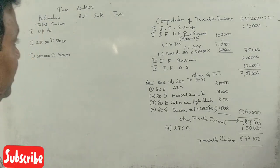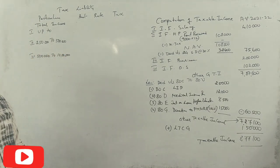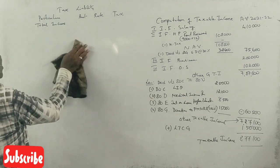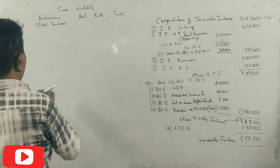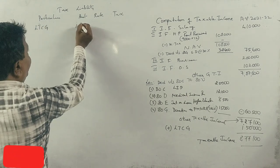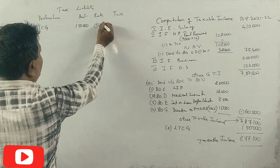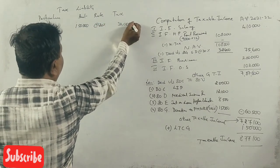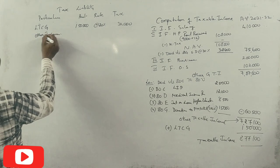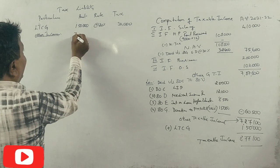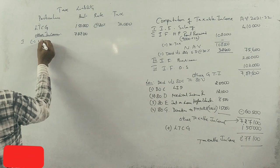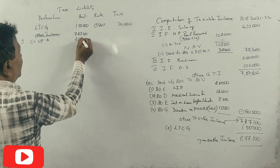Now calculate tax liability. First, long-term capital gain is 1,50,000 rupees at 20%, which is 30,000. Other income total is 7,27,100.